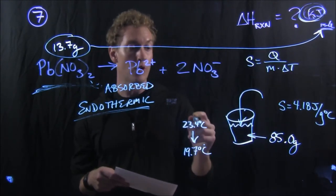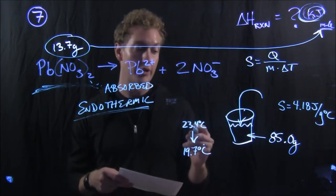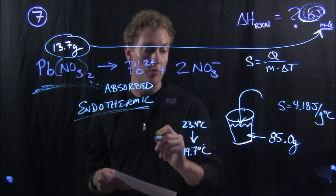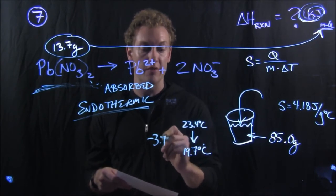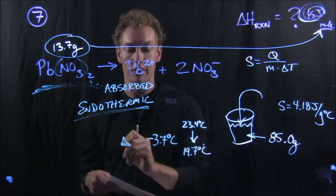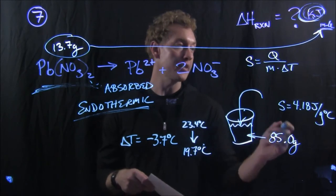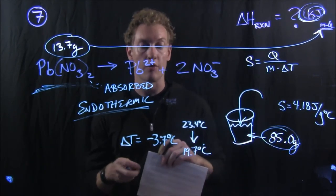Change in temperature - well, we went from 23.4 degrees down to 19.7. So that would be 3.7, negative 3.7 degrees Celsius change in temp. And the mass, the M, was 85 grams of water.